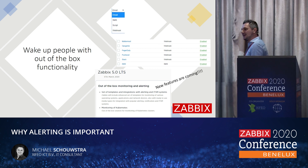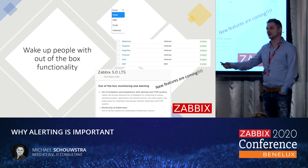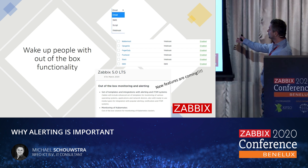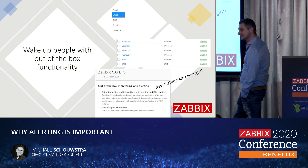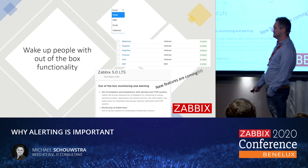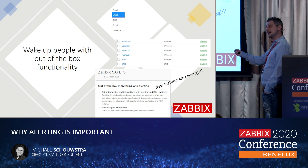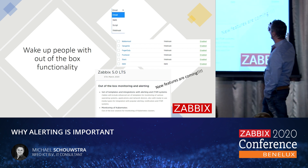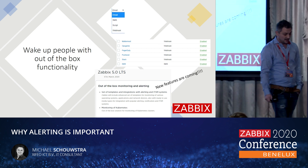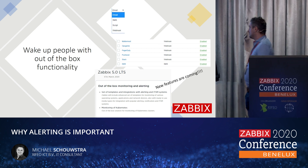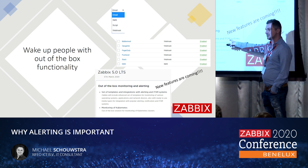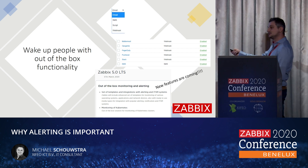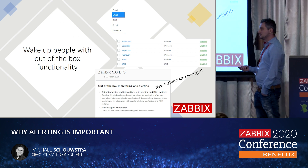Zabbix has some cool functionalities on this, and it's also extending them in 5.0. Out-of-the-box functionalities to wake a person up — how cool is that? Well, not if you are the one receiving the call, but setting it up is pretty cool. Out-of-the-box things like webhooks, SMS portals, scripts that you fire. We're getting a little bit more functionalities with 5.0. But if that still doesn't fit your need, what to do next?